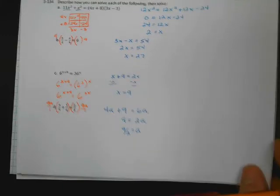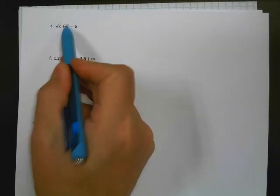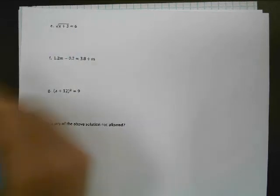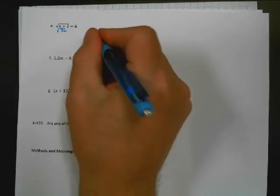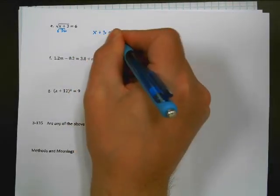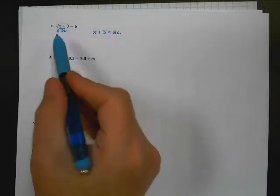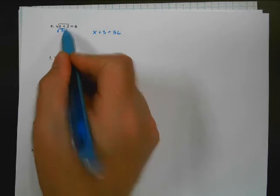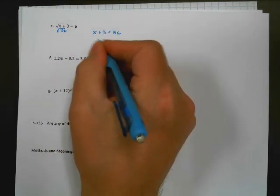We've got three more — pause if you want to try these on your own. This next one is better to look inside. It says the square root of x plus 3 equals 6. The square root of what equals 6? That has to be 36, because the square root of 36 equals 6. So looking inside: x plus 3 has to equal 36. Subtract 3 from both sides and x equals 33. You could also have squared both sides — squaring is the opposite of square rooting — and still gotten x plus 3 equals 36.